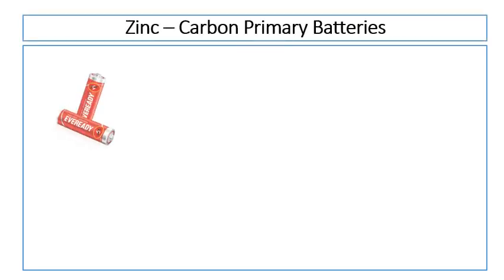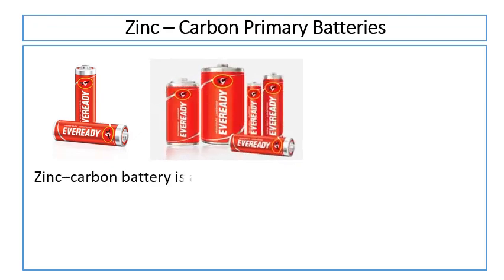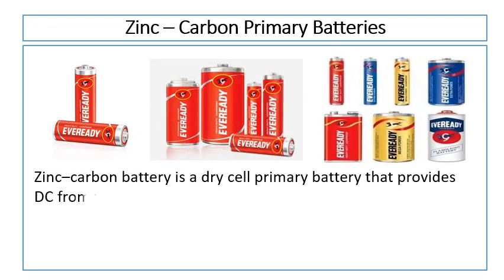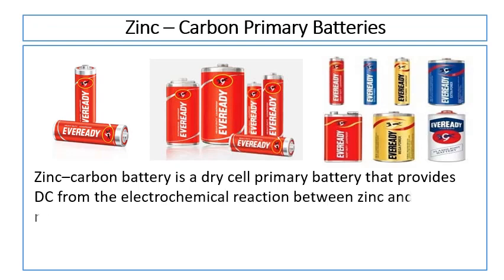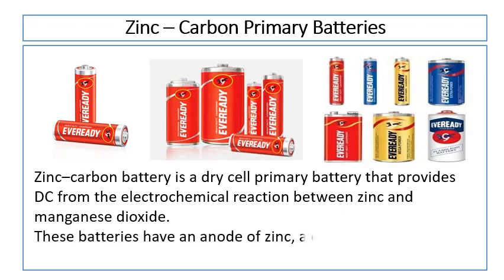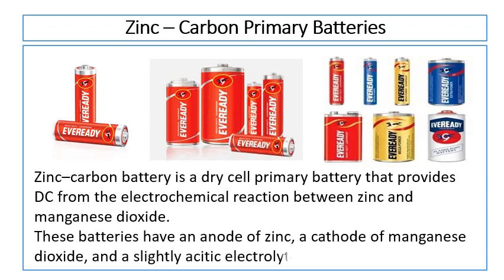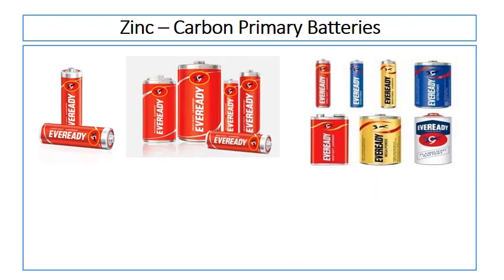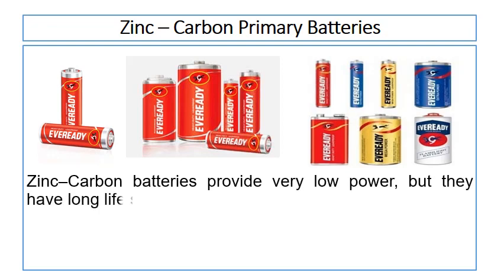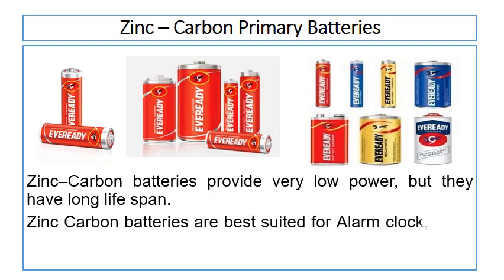The zinc-carbon primary battery is a dry cell primary battery that provides direct electric current from an electrochemical reaction between zinc and manganese dioxide. These batteries have an anode of zinc, a cathode of manganese dioxide, and a slightly acidic electrolyte. Zinc-carbon batteries provide very low power but they have a long lifespan. They are best suited for alarm clocks, toys, remote controls, and radios.